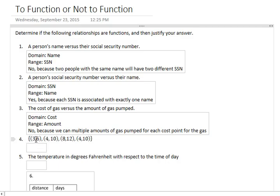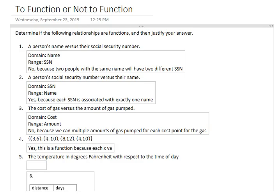Here we've got a set of ordered pairs: (3,6), (4,10), (8,12), (4,10). When you have a set of ordered pairs or a table, you are looking for multiple instances of the same input. In this case, we've got a 4 and a 4. You want to make sure that the outputs are the same. In this case, they're both 10. That means yes, this is a function, because each x value is associated with exactly one y value.